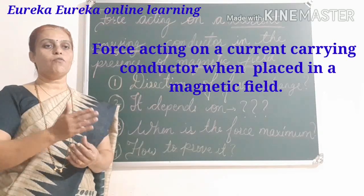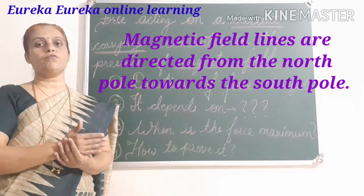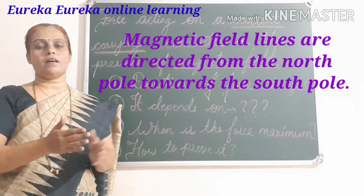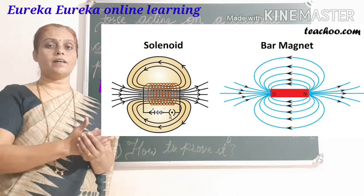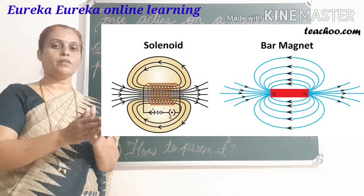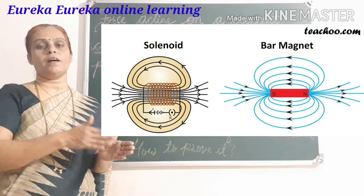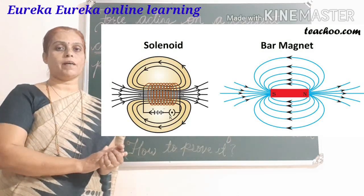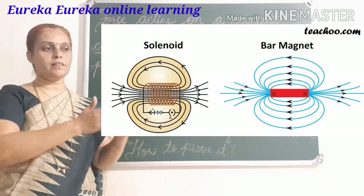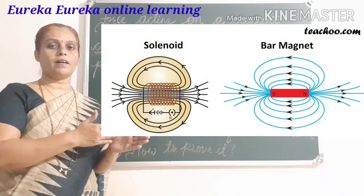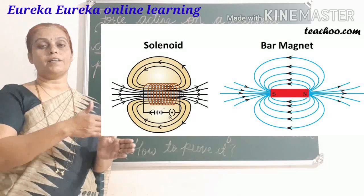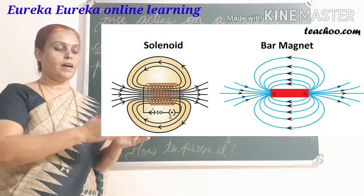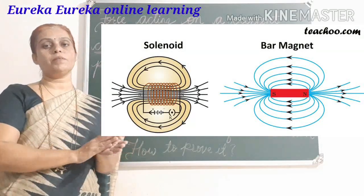Now we have previously studied the magnetic field — the properties of magnetic field lines, how they are directed from the north to the south pole, how the magnetic field lines in a solenoid are compared to those in a bar magnet, and how the magnetic field lines in a circular loop are compared to those in a disc magnet. These are examples of permanent magnets: the disc magnet and the bar magnet.